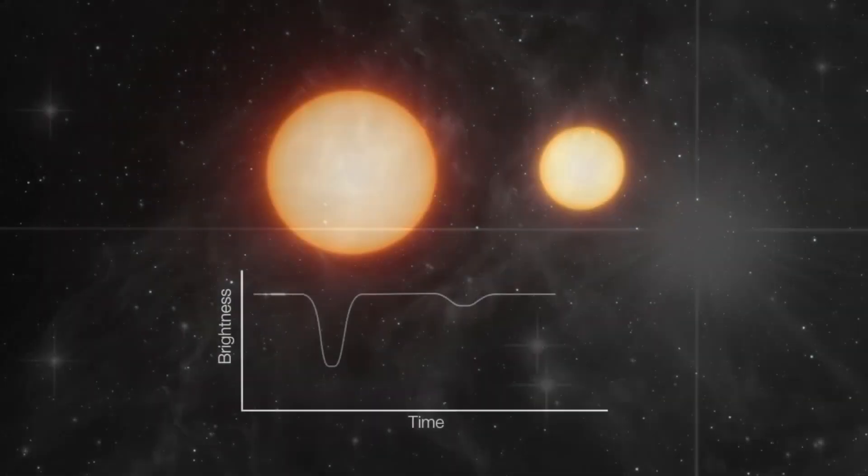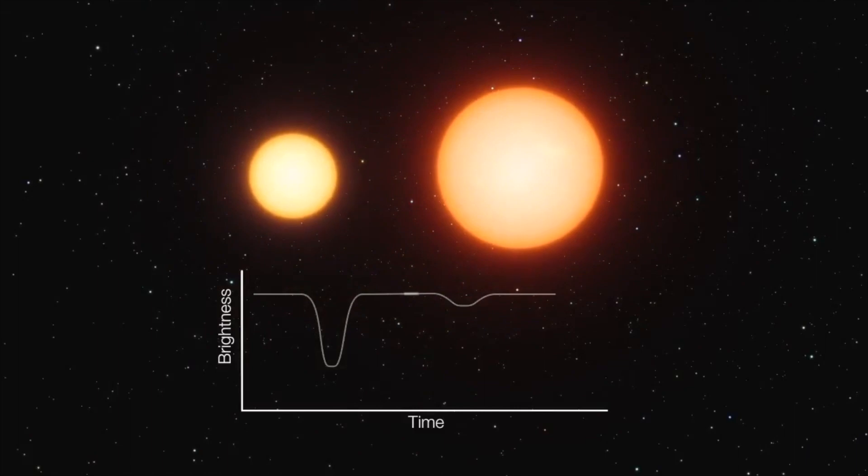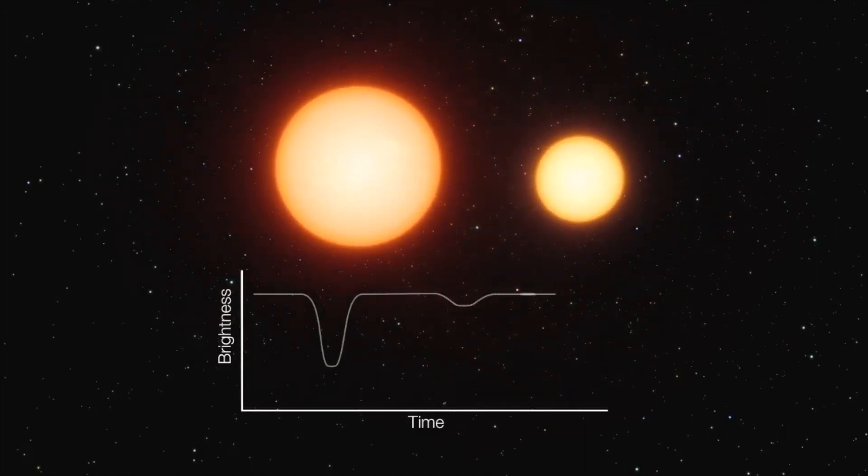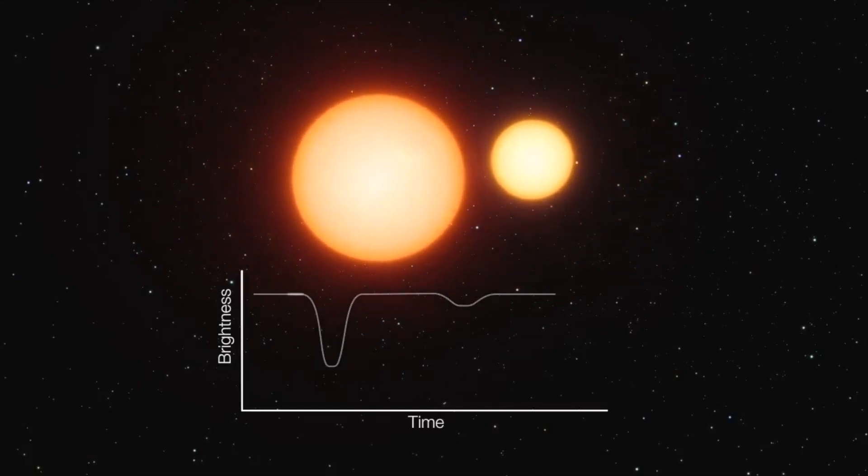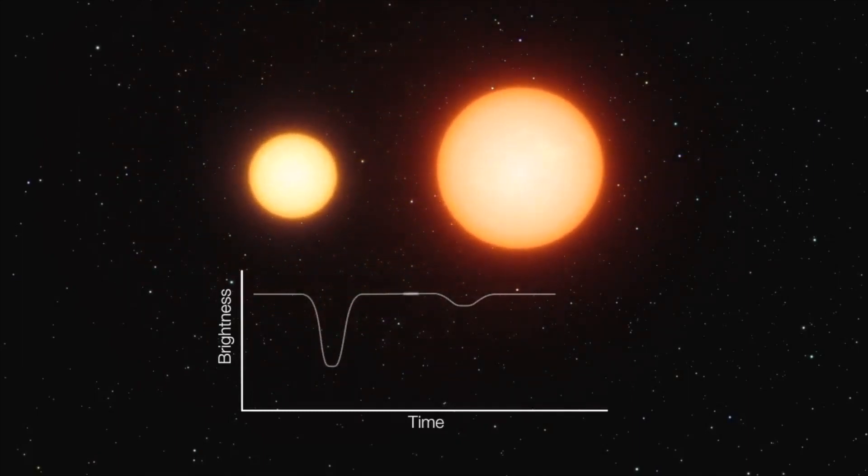Some stars vary extrinsically. That is, something external causes their apparent brightness to change. Eclipsing binary stars provide one example of extrinsic variations when one star in a binary system passes in front of the other star and blocks some of its light.